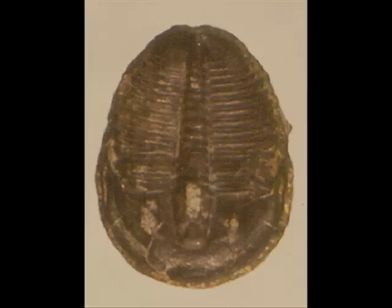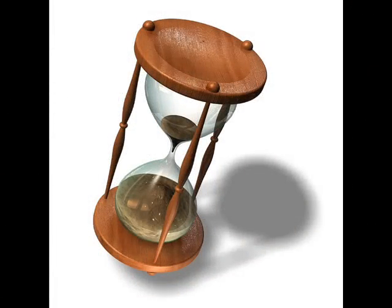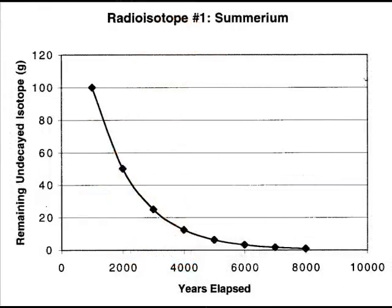This is because radiometric dating is not an hourglass. In an hourglass, the sand runs through at a constant rate, and in a certain amount of time there is simply no more sand left. Not so with radioactive decay. Unstable atoms decay at predictable exponential rates. The more atoms there are in a collection, the higher the statistical probability that one will decay.